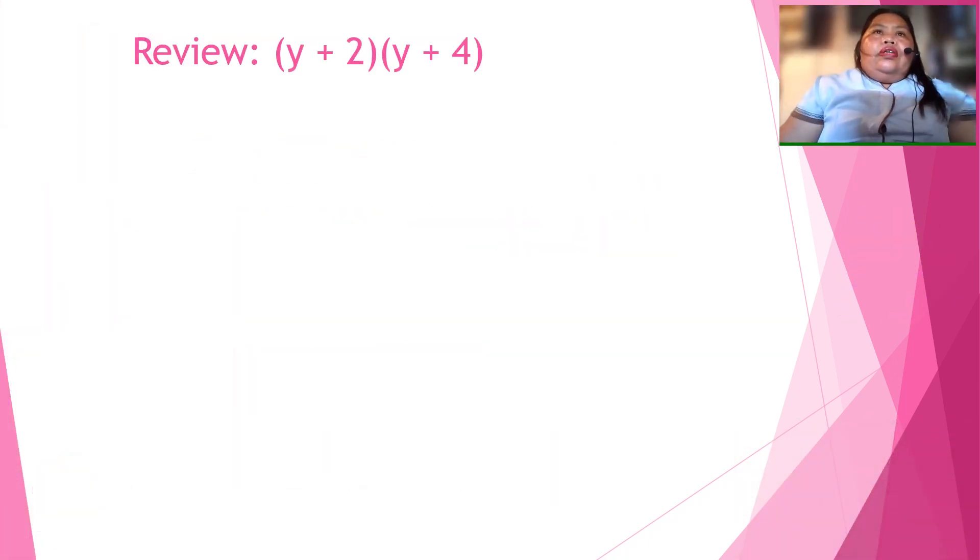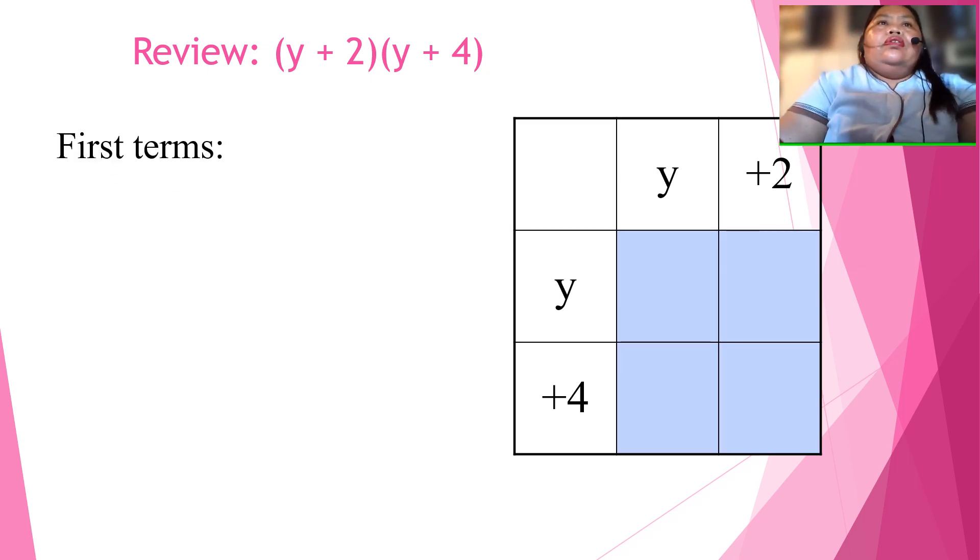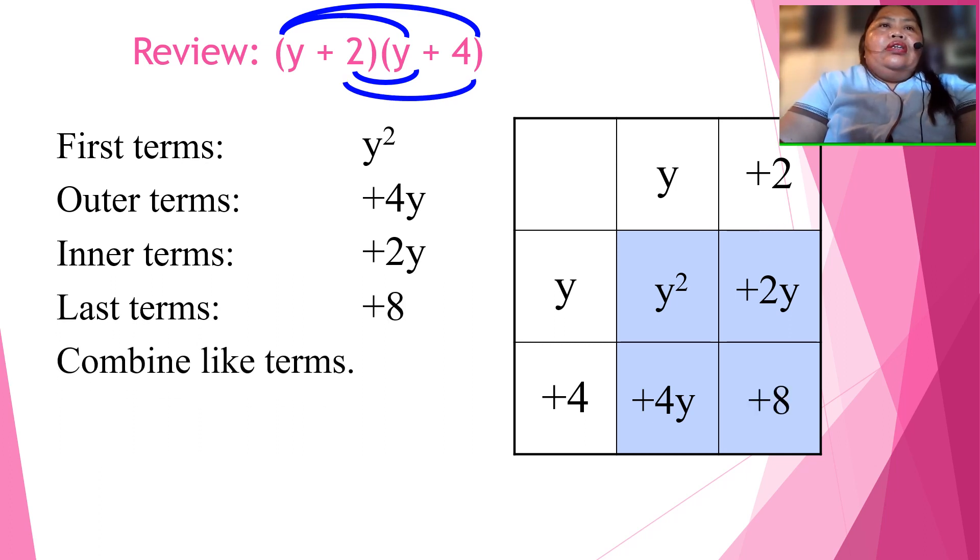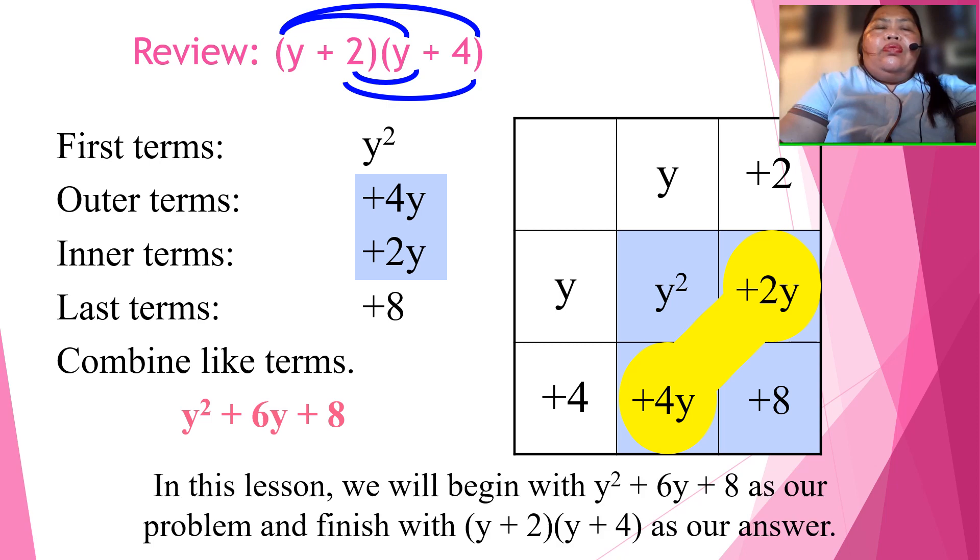Okay, so let's review. Our first term is y times y, which is y squared. Our outer term is y times 4, which is 4y. Our inner term, which is 2 times y, is 2y. And our last term is 2 times 4 equals 8. So if we're going to combine like terms, that's 2y plus 4y, that will become 6y. So in this lesson, we will begin with y squared plus 6y plus 8 as our problem and finish with y plus 2 and y plus 4 as our answer. So let's go back to our original problem.